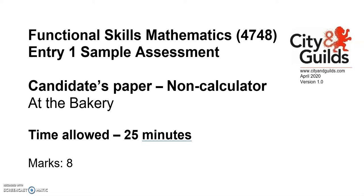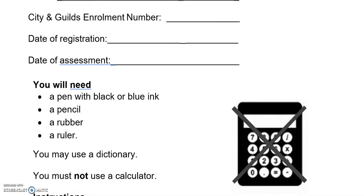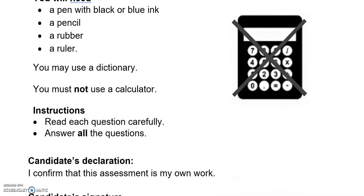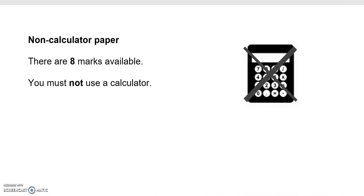This is an Entry 1 Functional Skills sample paper from City and Guilds. It's split into two parts. The first part you can't use a calculator for, the second part you can.